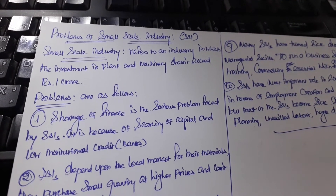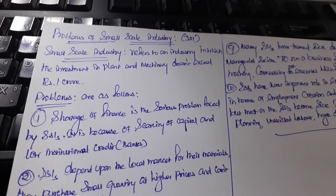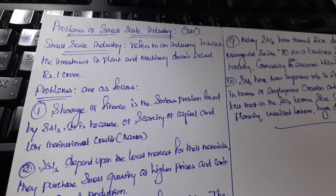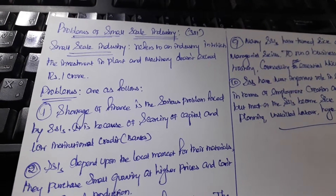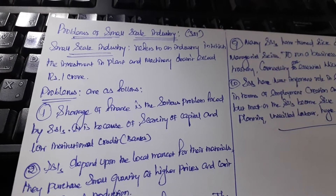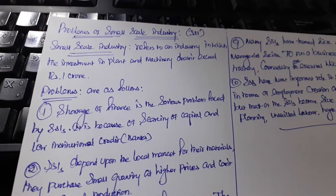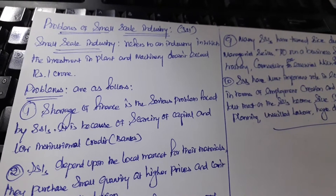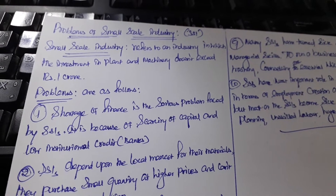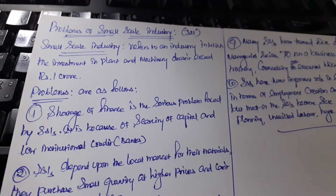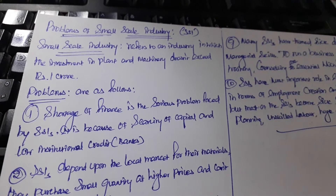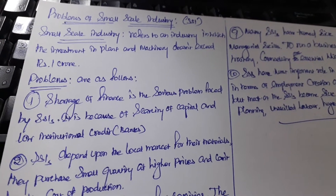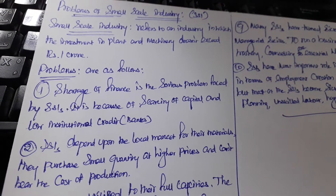Hi, good evening to all. Today's topic is all about problems of the small scale industry. It is an important topic of tourism entrepreneurship. We will look at the meaning of the small scale industry, or SSI. It refers to an industry in which the investment in plant and machinery does not exceed one crore. Those industries are called SSIs.